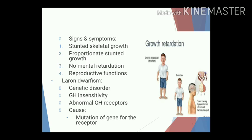Signs and symptoms include stunted skeletal growth due to growth hormone deficiency. A pituitary dwarf with a chronological age of 20 years has a body structure like that of 7–10 years of age. Growth is proportionately stunted, with decrease in size of all viscera and organs. If only growth hormone secretion is reduced, the person does not have mental retardation and reproductive functions are normal.